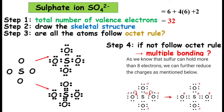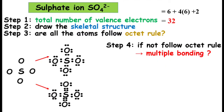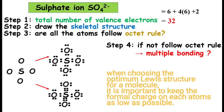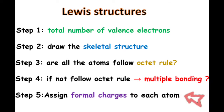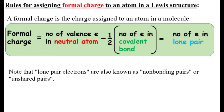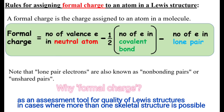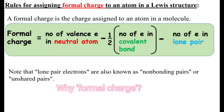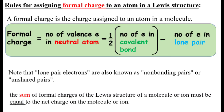So which is the correct Lewis structure of sulfate ion? We need to find out the best structure. Therefore, we need to calculate the formal charge to check whether all the constituent atoms are in their least possible formal charge value. Calculate the formal charge of each atom in a molecule as the last step of drawing the Lewis structure. These equations can be used to determine the formal charge of an atom in a molecule. Always bear in mind that we use formal charge as an assessment tool for the quality of a Lewis structure in cases where more than one skeletal structure is possible. The sum of formal charges of the Lewis structure of a molecule or ion must be equal to the net charge on the molecule or ion.